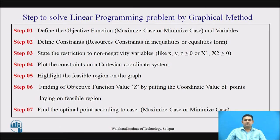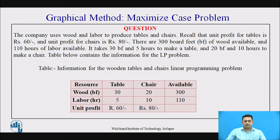These are the steps involved for solving the graphical method. Now let us take the example and start to solve step by step the particular LPP problem. This is a problem in which we observe that the company is manufacturing chairs and tables. The company defines the unit profit — for the table it is 60 and for the chair it is 80 — and the constraints: availability of raw material, that is wood, which is only 300 board feet, and the availability of labor time, that is 110 labor hours.